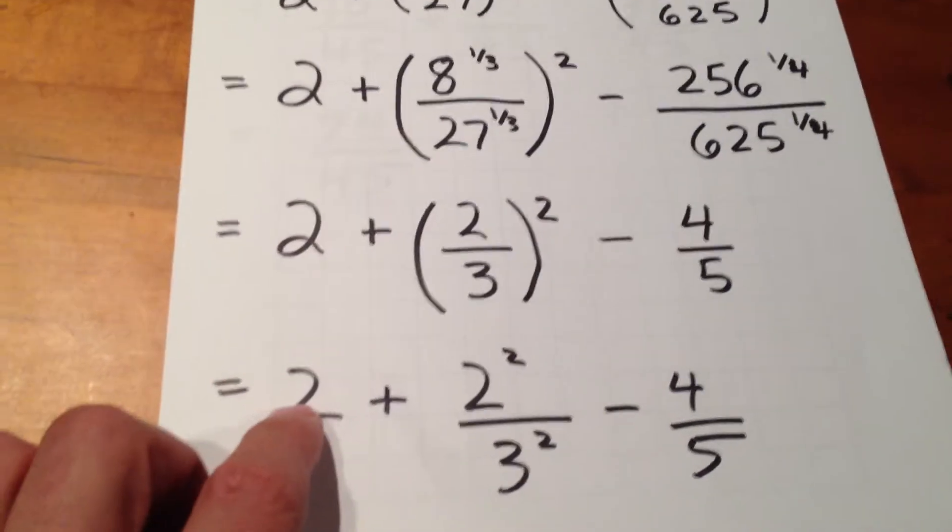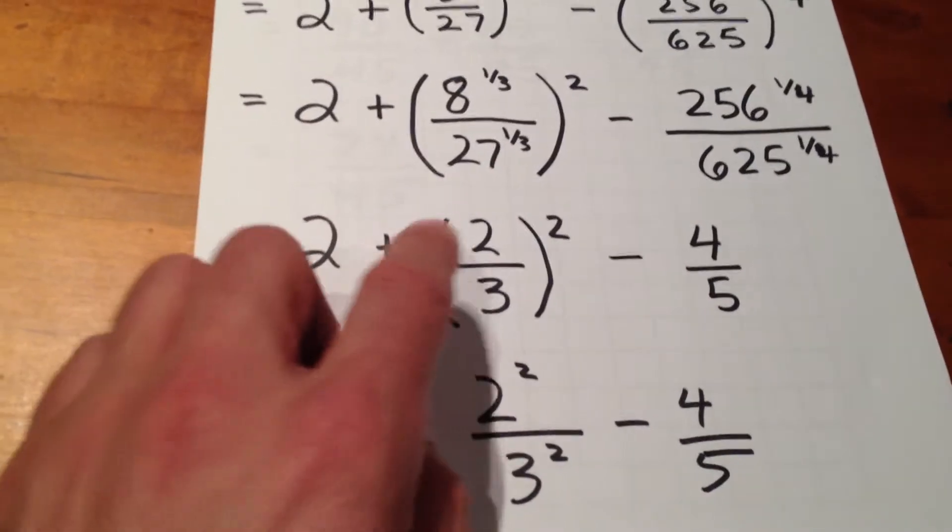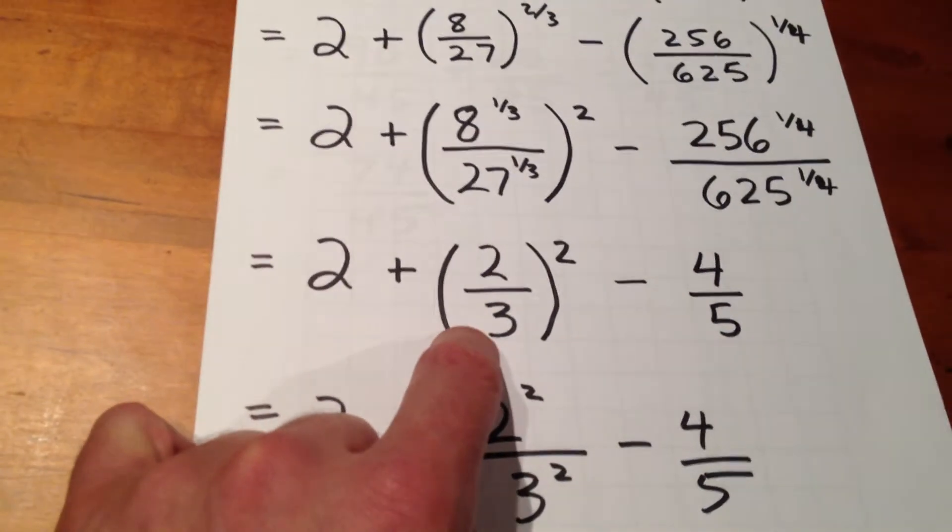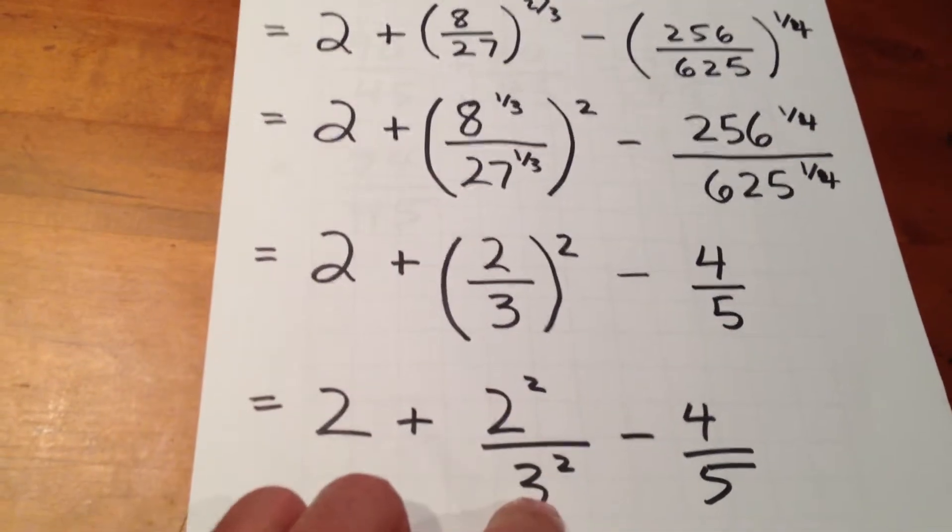So what we now have is merely needing to evaluate this middle fraction. Two-thirds squared is 2 squared over 3 squared.